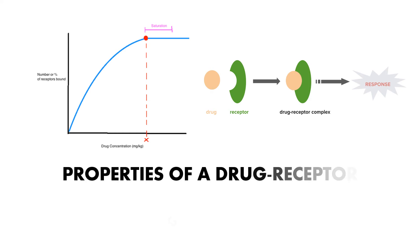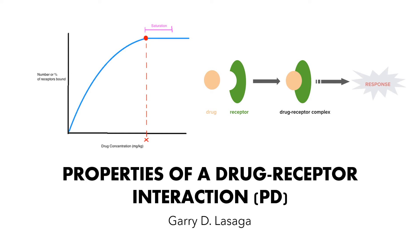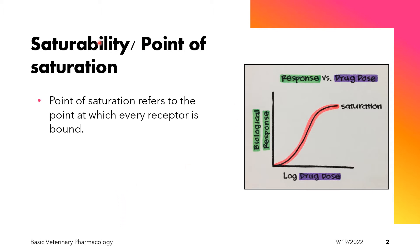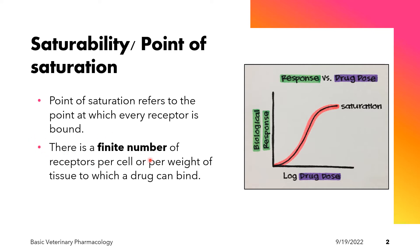In this presentation, we'll discuss the properties of a drug-receptor interaction. The first property of the drug-receptor interaction is saturability, or point of saturation. When we say point of saturation, it refers to the point at which every receptor is bound to the drug. This happens because there is a finite or limited number of receptors per cell or per weight of tissue to which a drug can bind.